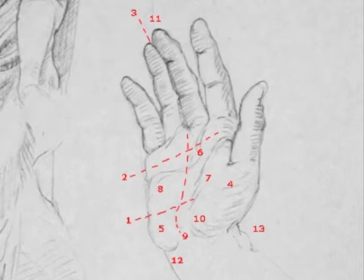the thenar or lifeline, number seven, and the more distal line of the fingers or heart line, number eight.